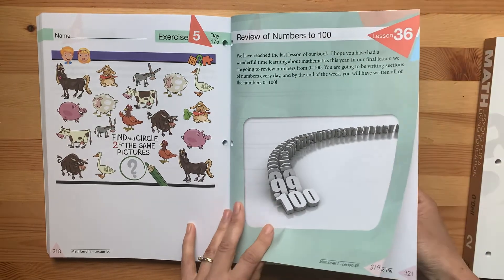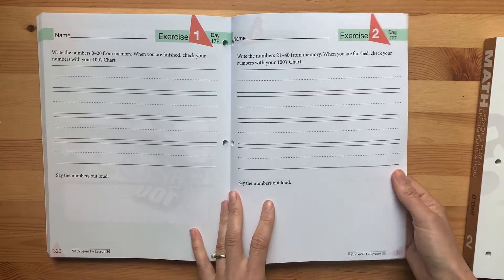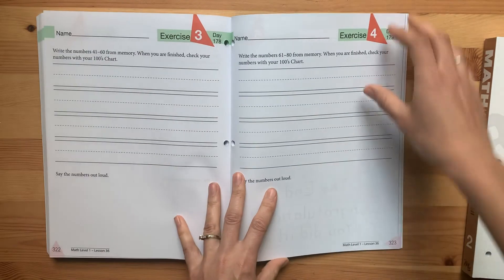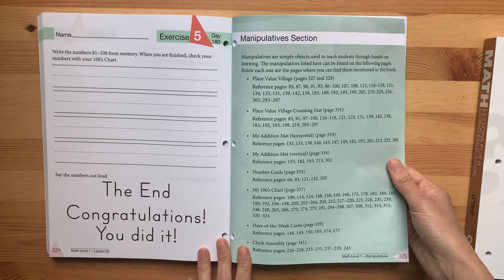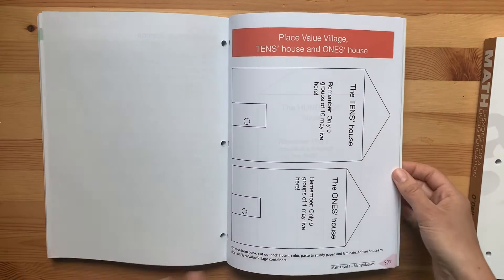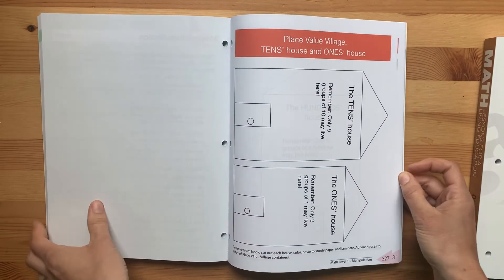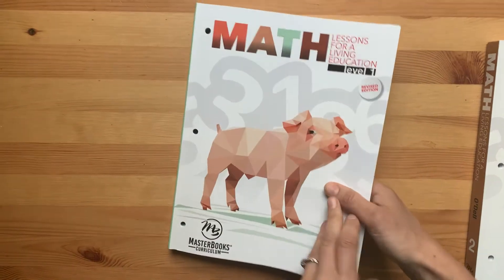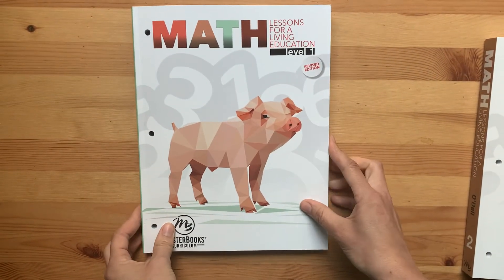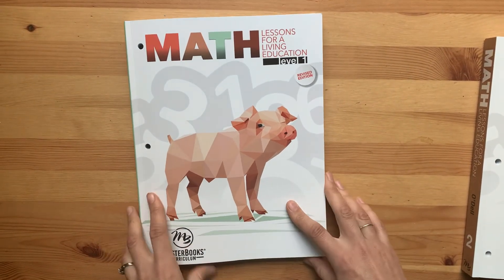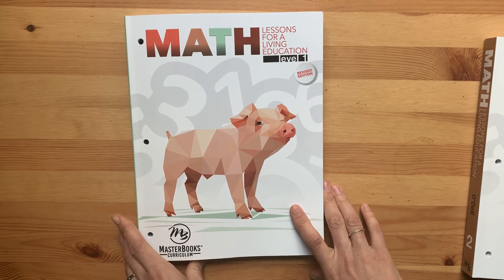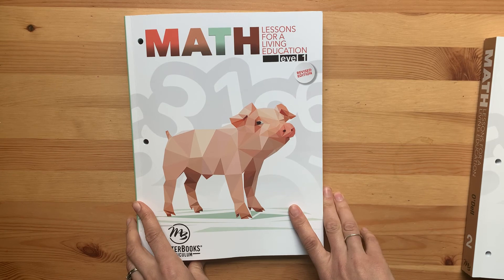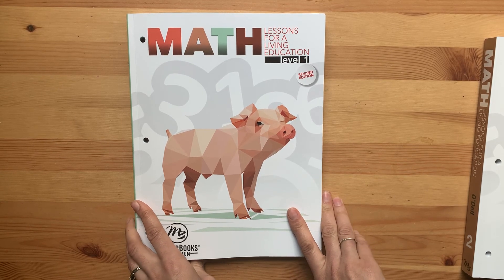Reviewing numbers one to a hundred. Writing numbers one to a hundred. The end of the book. Into your place value village. I hope that helps you to understand what's in math level one of Masterbooks. You can always take their placement online if you're not sure. I will also be posting a flip through of level two if you want to see the inside of that.